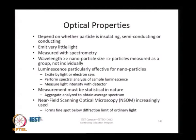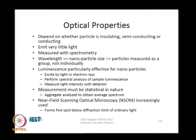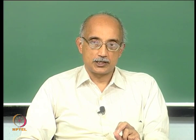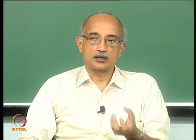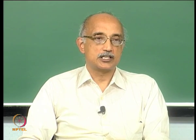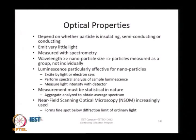Optical properties certainly change with particle size. The optical behavior of nanoparticles depends on whether they are insulating, semiconducting, or conducting. Nanoparticles on their own do not emit light very much — light emission is a surface area dependent property, so as particles become smaller, emission and scattering decrease. If the wavelength of incident light is larger than the particle size, you will not measure a single particle but groups or clusters, so the wavelength must be kept significantly smaller than the particle size. Luminescence measurements are very effective for nanoparticles because of their chemical reactivity — they are easily excited by light or electron rays — so spectral analysis of luminescence can provide information about size, shape, and composition of nanoparticles.